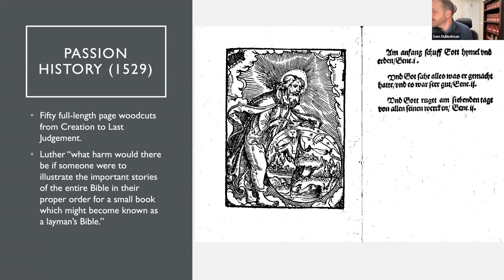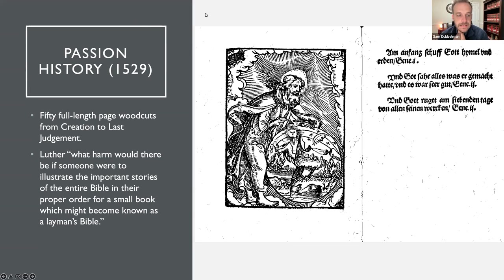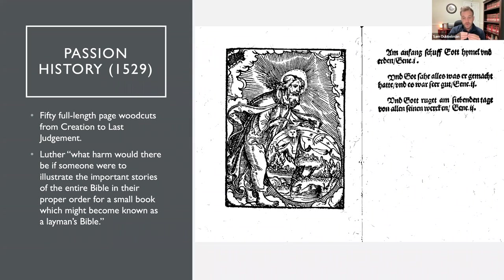I want to introduce a devotional Bible that Luther produced in 1529. It had one woodcut image on the left side and a summary Bible verse on the right side — a story picture Bible with 50 pictures from creation to the last judgment. Luther intentionally intended this for laity as a kind of lay Bible.